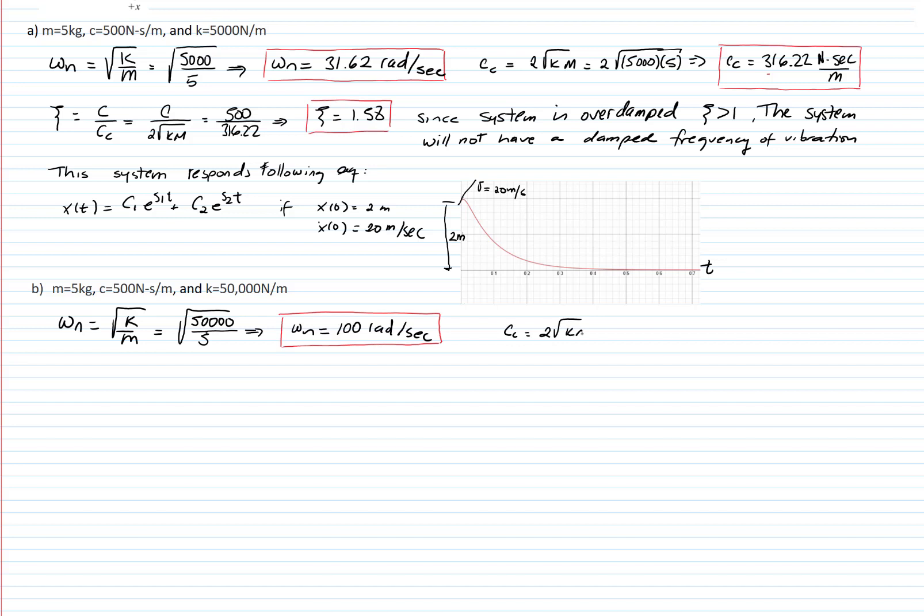Our critical damping is 2 times the square root of k times m. In this case, k is 50,000 times our mass, which is 5, a critical damping coefficient of 1,000 newton seconds over meter. Our damping ratio equals the constant of the damper divided by the critical constant. We plug in the numbers, and we get 500 divided by the number we just calculated, which is 1,000. That gives me a damping ratio of 0.5. This number is less than 1.